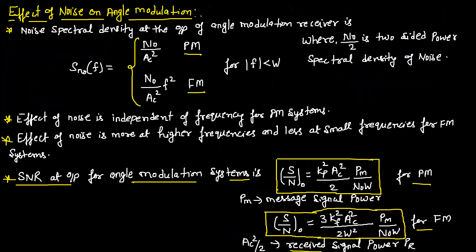Effect of noise on angle modulation. The noise spectral density at the output of an angle modulation receiver is N0/AC² for phase modulation, and N0·f²/AC² for frequency modulation (for f less than W). The effect of noise is independent of frequency for phase modulation, but noise is greater at higher frequencies for frequency modulation.